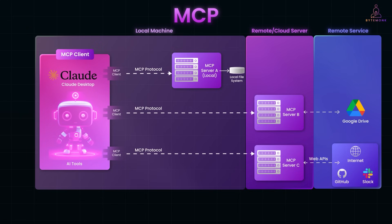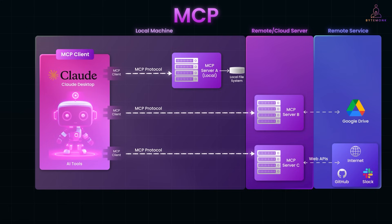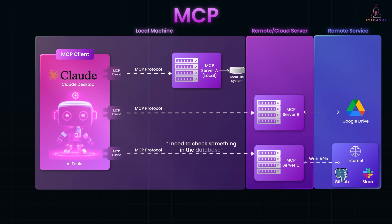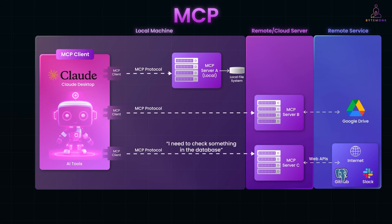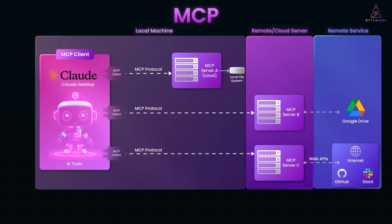MCP defines a common language for the AI, the LLM, and tools to talk. An AI that understands MCP can request to use a tool via this protocol, and the tool wrapped in an MCP server will do the action and return the result. It's as if the AI says, 'I need to check something in the database,' and MCP is the agreed upon way to ask and get an answer. The magic is that the AI doesn't need to know the technical details of the database or web service — MCP handles that communication in the background.